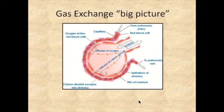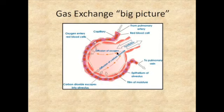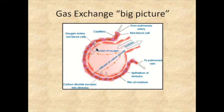The big picture of gas exchange is that air you inspire comes down through the conducting portion, down to the respiratory portion, and into an alveolar space. Oxygen has to pass through the epithelial cell lining the alveolar space, through the interstitium — hopefully not a very thick interstitium — and then across the endothelial cell's plasma membrane to attach to a red blood cell.